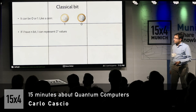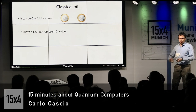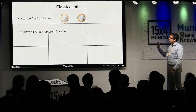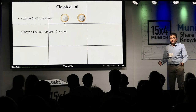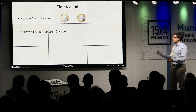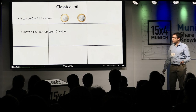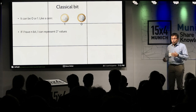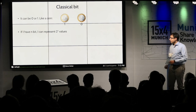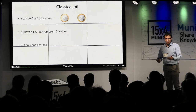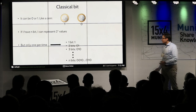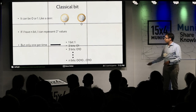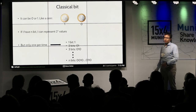The classical computer is based on a bit — it is the unit of a computer. Maybe everyone here has heard about it. A bit can be zero or one, like a coin that can be tails or heads. If I have n bits, I can represent 2^n values. But there's a catch: only one at a time. If I have one bit, I decide if it's one or zero. If I have two bits, I need to decide on the first one — let's say zero — and on the second one — let's say one.